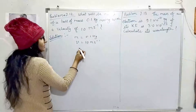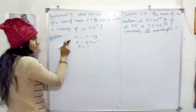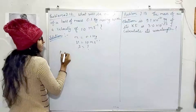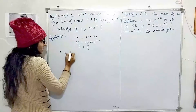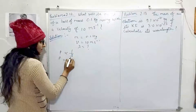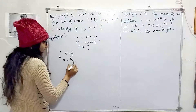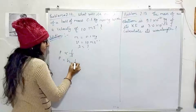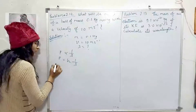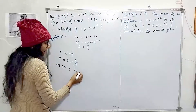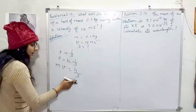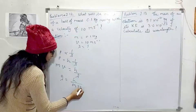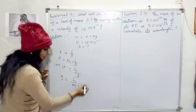We need to find the wavelength. In the de Broglie relationship, momentum is inversely proportional to wavelength: p = h/λ. So momentum, which is mass into velocity, equals h divided by lambda. Therefore, lambda equals h divided by mass into velocity.